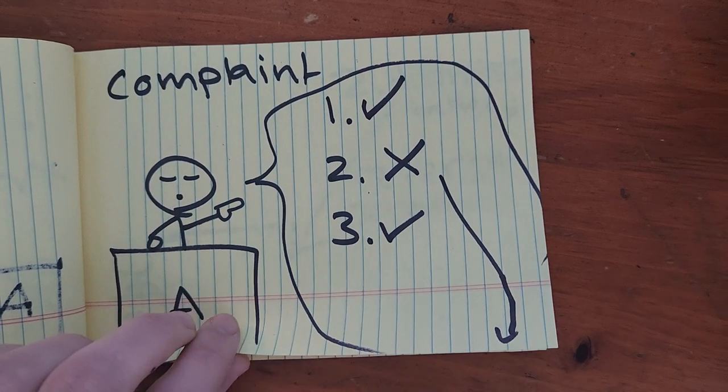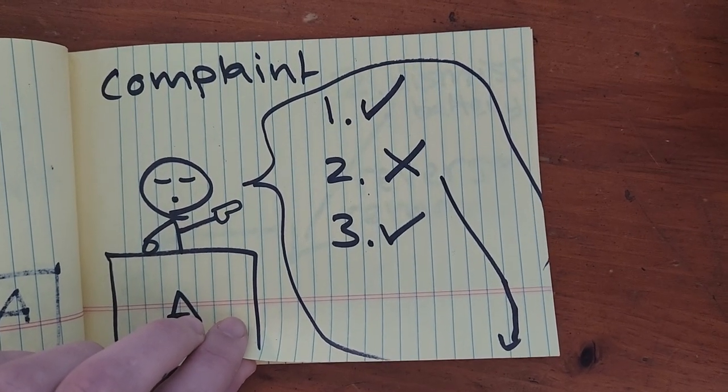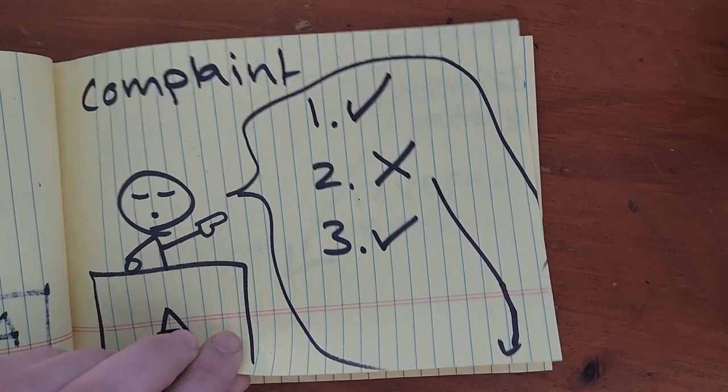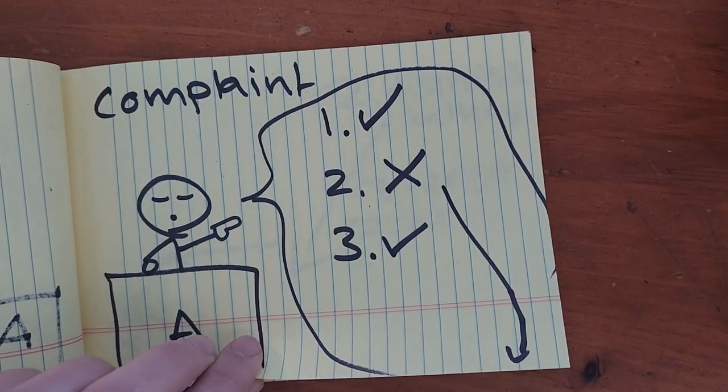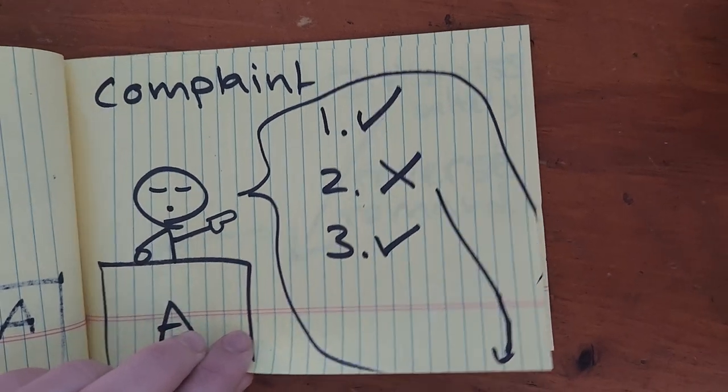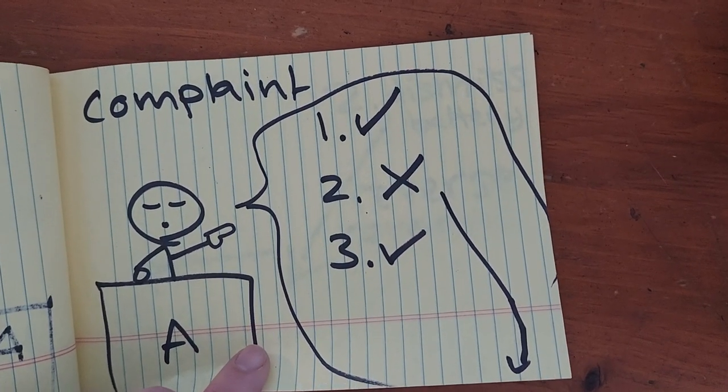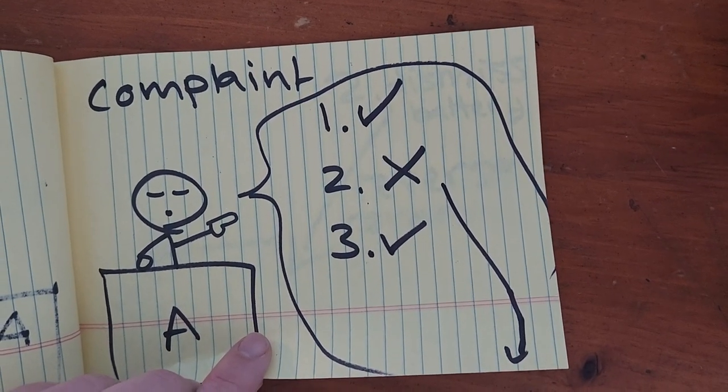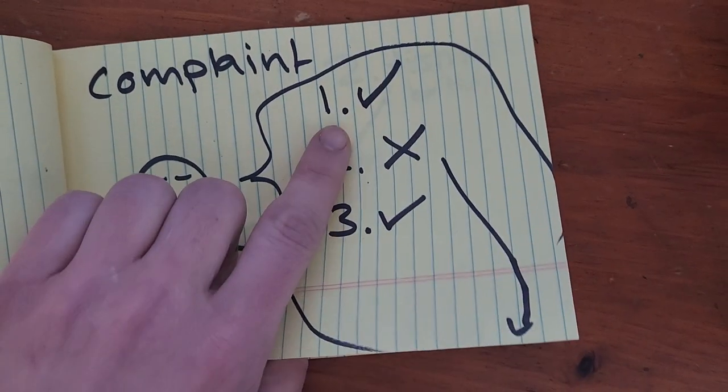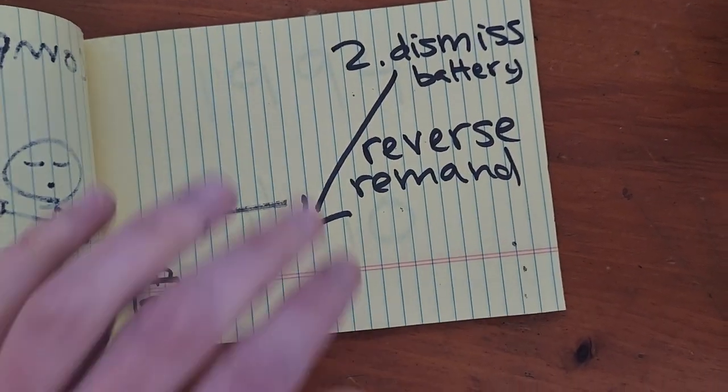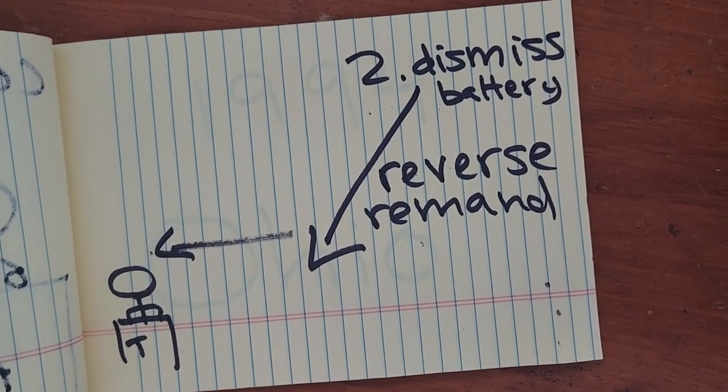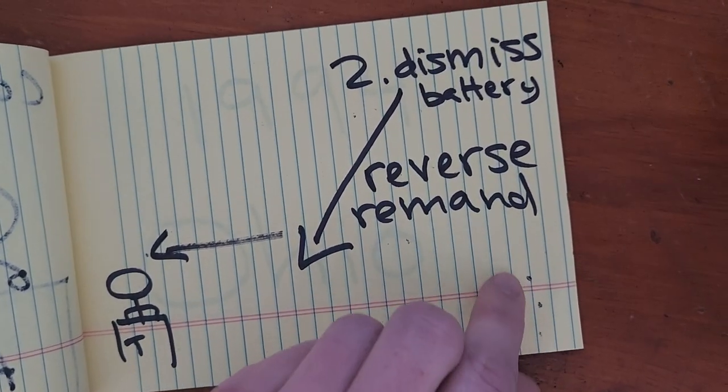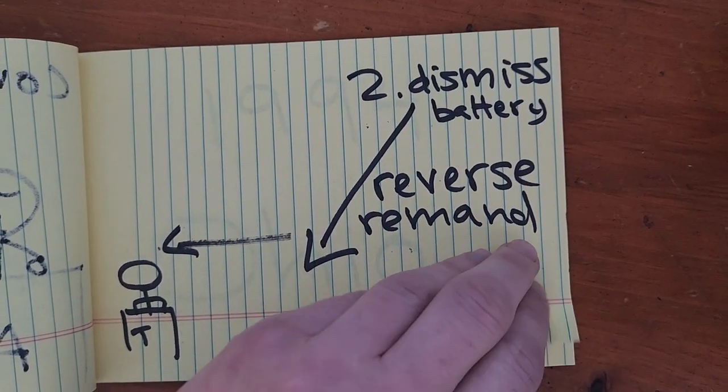But the complaint brought by the appellant is remanded. The first and third are held up. In the matters of the first and third complaint, the appellant court affirms the trial court's decisions. But in the second, in the second challenging the trial court's dismissal of the battery charge, the case is reversed and remanded back.